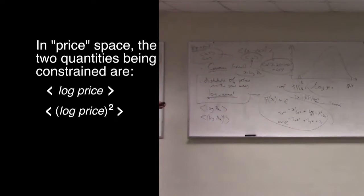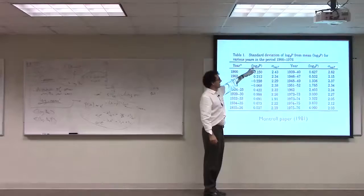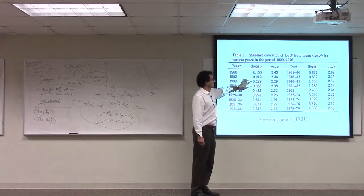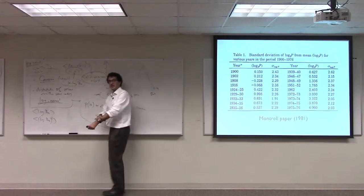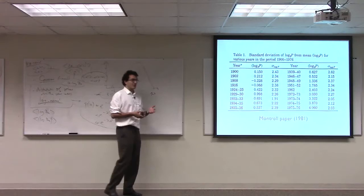So the first thing he points out is that the average of the log of the prices is a slowly increasing function of time, except for a funny little blip here. So this is something you would expect. Over time, the average log price, and in fact the average price as well, is going to increase, and it's going to increase solely because of inflation. Inflation is a multiplicative process.